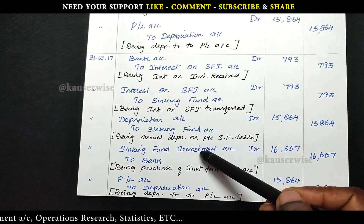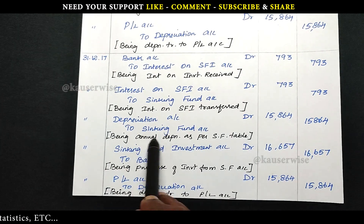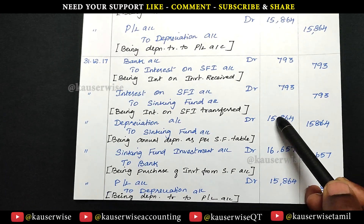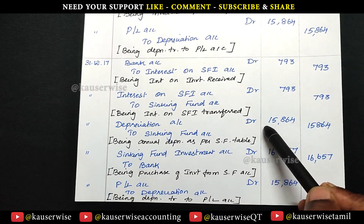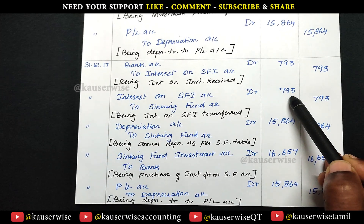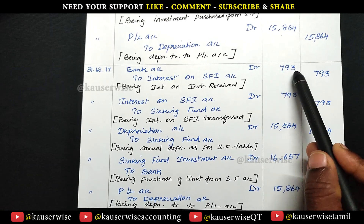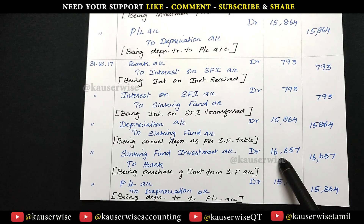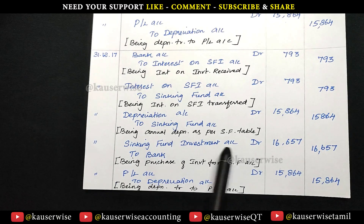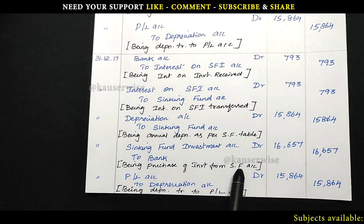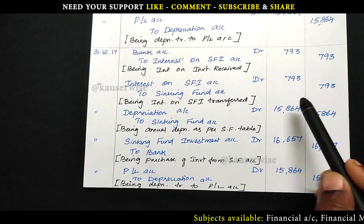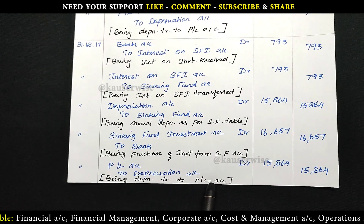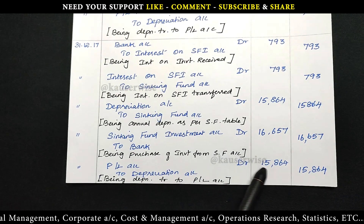At the end of the second year, repeat the three entries from year one. Entry one: depreciation account debit to sinking fund account — Rs. 15,864 as per sinking fund table. For the investment entry, you invest the depreciation amount plus the interest received from last year: Rs. 793 plus Rs. 15,864 equals Rs. 16,657. Entry: sinking fund investment account debit to bank account, Rs. 16,657. Then transfer depreciation to profit and loss account: profit and loss account debit to depreciation account, Rs. 15,864.